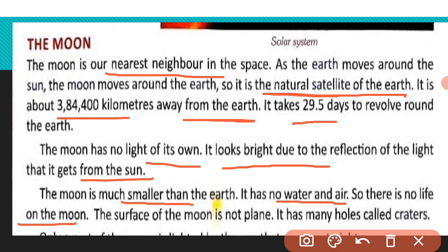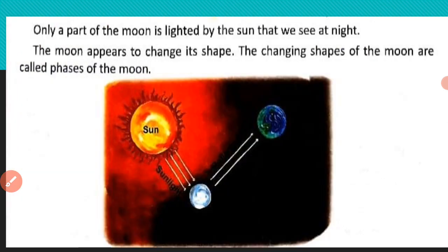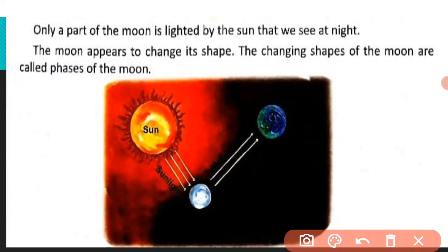Air and water के बिना life possible नहीं होती। The surface of the moon is not plain — it has many holes called craters. Moon के surface पर बहुत सारे गड्ढे हैं जिन्हें craters कहते हैं। Only a part of the moon is lit by the sun — that is what we see at night. जितने part पर sun की light reflect होती है, उतना ही part हम Earth से देख सकते हैं।